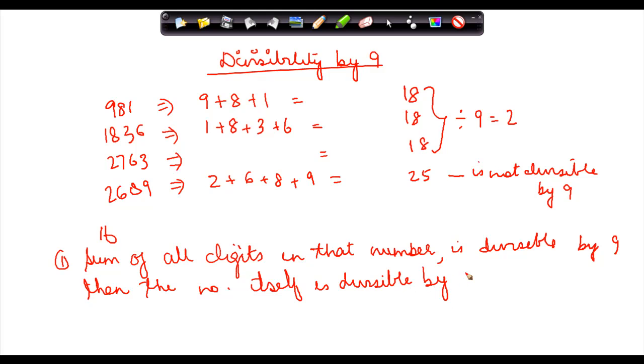So in these cases, applying this rule, the sum of digits of the first three numbers is divisible by 9, whereas for the fourth one it is not. Therefore, if I were to apply this rule, then 2763, 1836, and 981 will be divisible by 9. 2689 will not be divisible by 9.